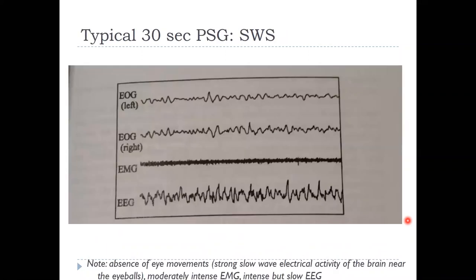This is a 30-second epoch of PSG showing slow wave sleep. You can see these really large, high amplitude waves. There is some eye movement, but it's not rhythmic. There is still some muscle tonation present.